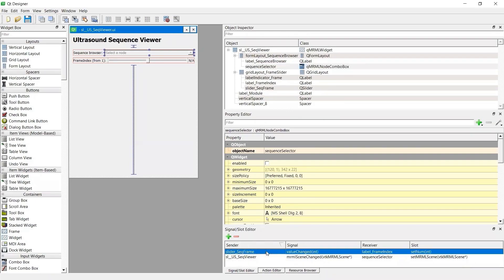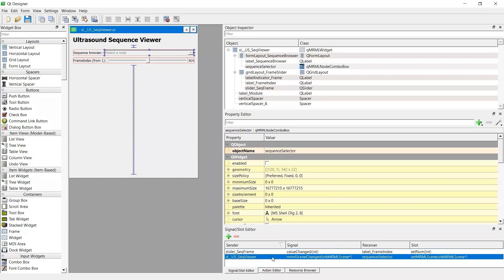We have two signal slots connected here. The first one is to pass the value of the slider to frame index label, so that we can always see the frame index of the current 2D image in the active SequenceBrowser. The second one is to let the SequenceBrowser drop-down list update whenever there is a Memmore scene change.